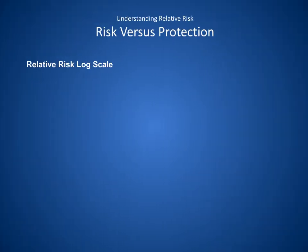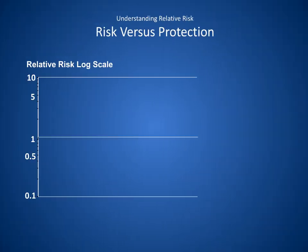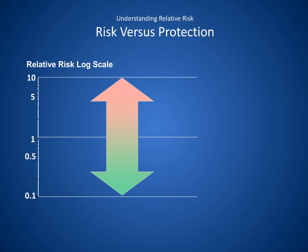Relative risk data are displayed on a logarithmic scale. In a simple comparison between an exposed group and a non-exposed group, a relative risk of 1 means there is no difference in risk between the two groups. For example, when the exposed group has 10 cases of condition X and the unexposed group also has 10 cases of condition X, 10 divided by 10 equals 1. A relative risk of 1 indicates there is no association between exposure and condition X.